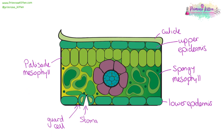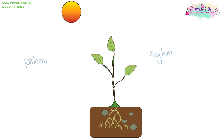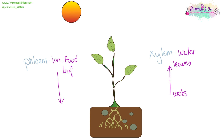Here we have a cross section of a typical leaf. Our palisade mesophyll is where photosynthesis is going to take place. The cuticle is the waxy layer. Upper and lower epidermis cover the plant. Spongy mesophyll is a space for gas exchange. And the guard cell and stomata is where transpiration takes place. Inside the plant, we have the xylem and the phloem. The phloem is going to carry water, generally in an upwards direction — from the roots, where it is collected, to the leaves, where it can be used in photosynthesis. And the phloem carries ions and food, generally in a downwards direction, from the leaf where food can be made in photosynthesis, to the roots where it can be stored.